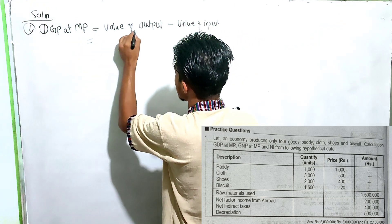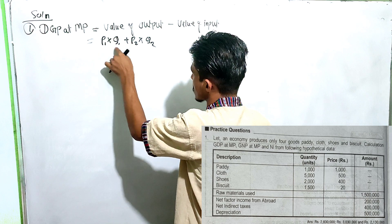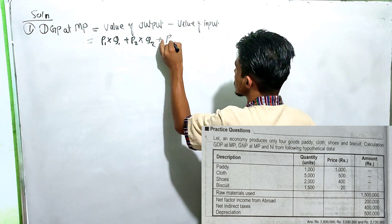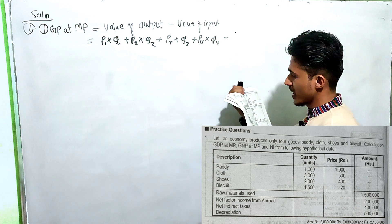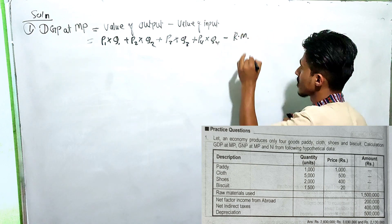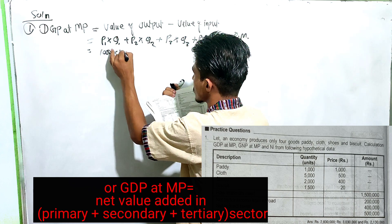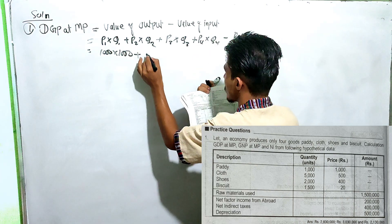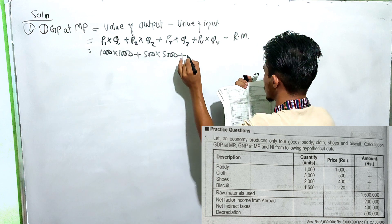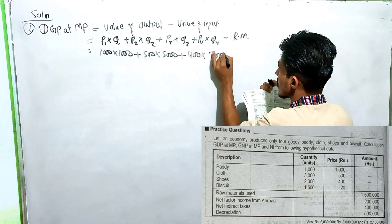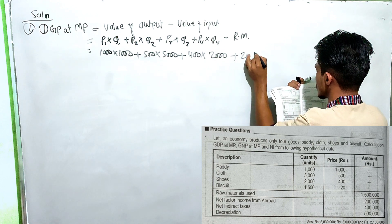The formula is: value of output = P1×Q1 + P2×Q2 + P3×Q3 + P4×Q4 minus value of input. P4×Q4 becomes price P4 = 20, Q4 = 1,500.